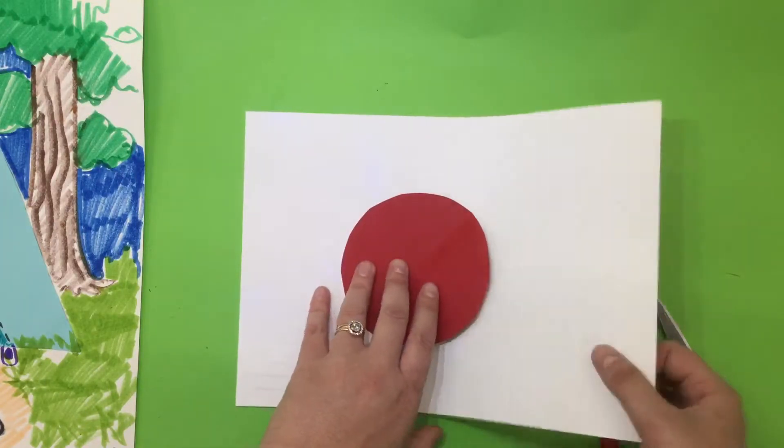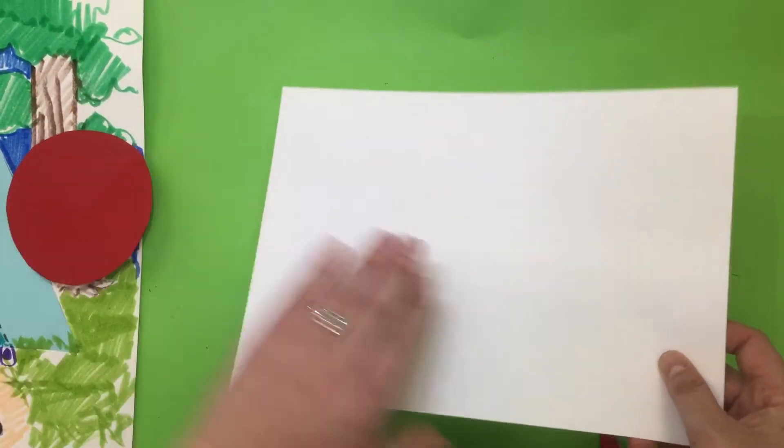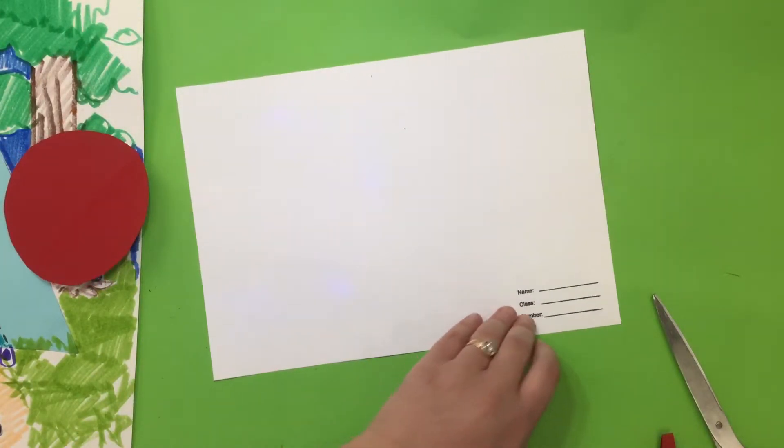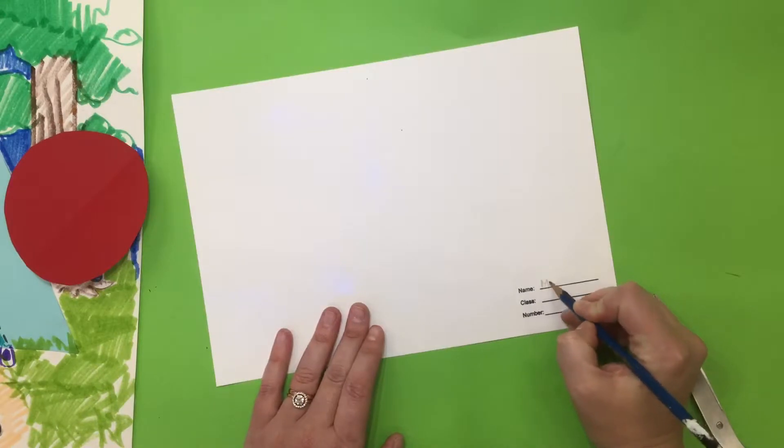With my circle I'm going to put it aside for a moment and on the back of my paper I'm going to first write my name, class, and number. That should have been before I even started.